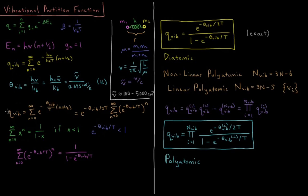Substituting that in, our vibrational partition function is equal to the sum from n equals 0 to infinity of e to the minus theta vib over T times n plus 1 half. We can factor this out — the 1 half here gives a factor of e to the minus theta vib over 2T, which is constant and appears in every term. Using e to the a times e to the b equals e to the a plus b, we factor it out to get e to the minus theta vib over 2T times the sum from n equals 0 to infinity of e to the minus theta vib over T to the n.